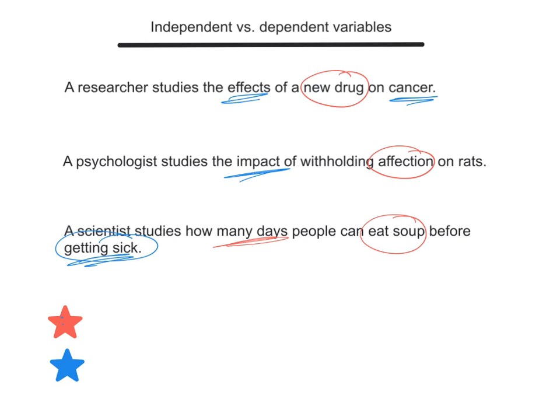The independent variable is really up to the researcher — what are you going to manipulate? The dependent variable depends on the people being studied. You can personalize these to your own individual research expertise. The independent variable can be anything: new drugs, new psychotherapies, new machinery. The dependent variable is how the participants react to that independent variable. A clever way to remember it: the dependent variable depends on how the people react, and the independent variable is what I, the researcher, get to choose.